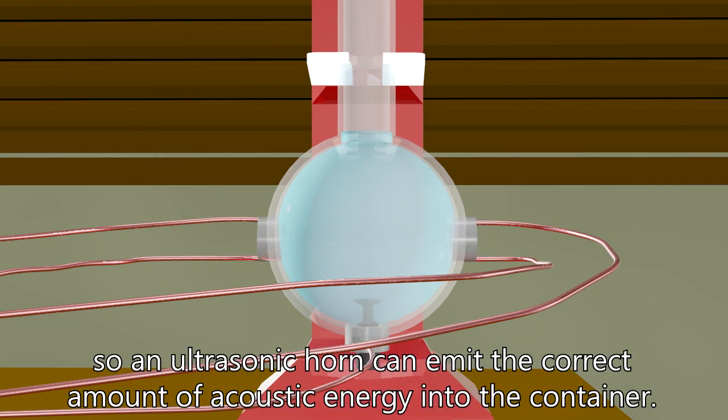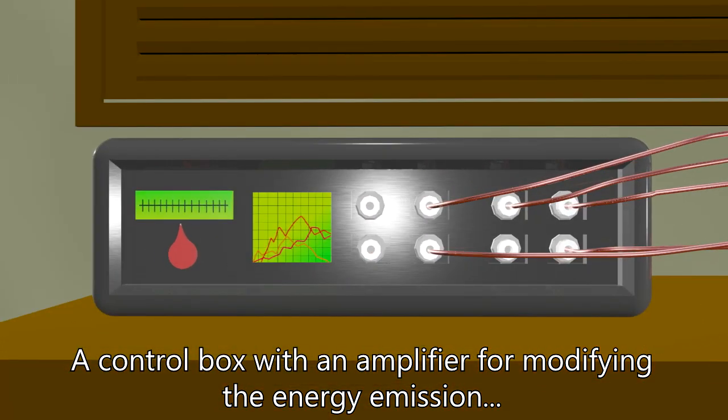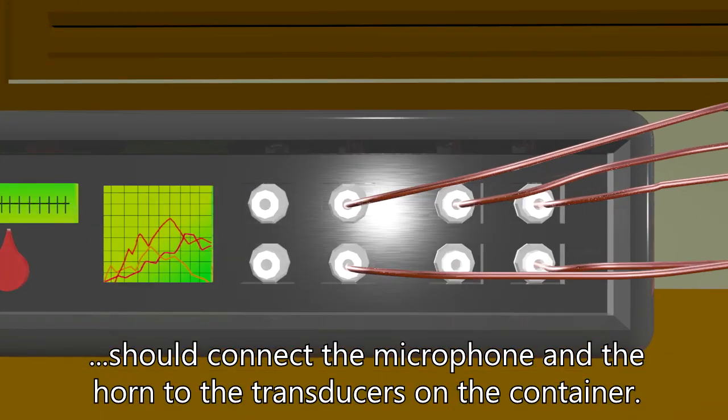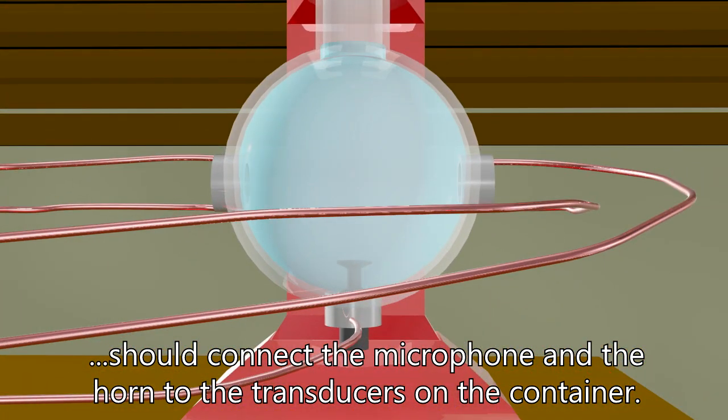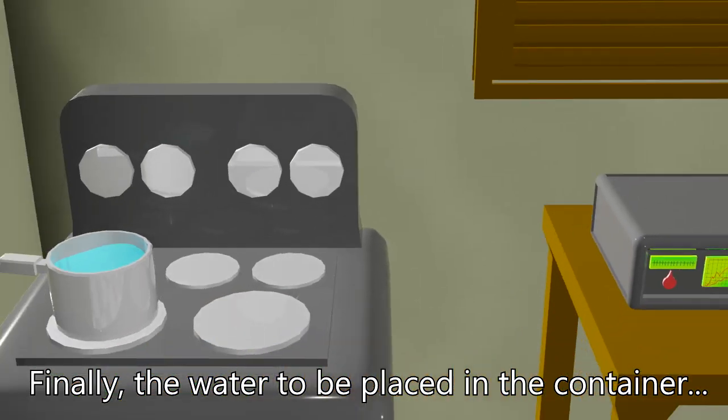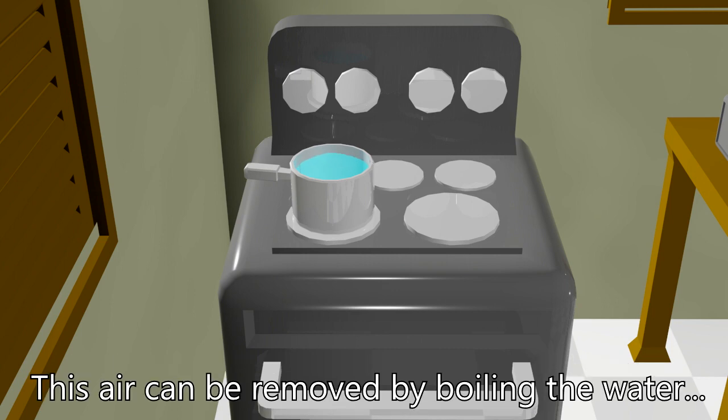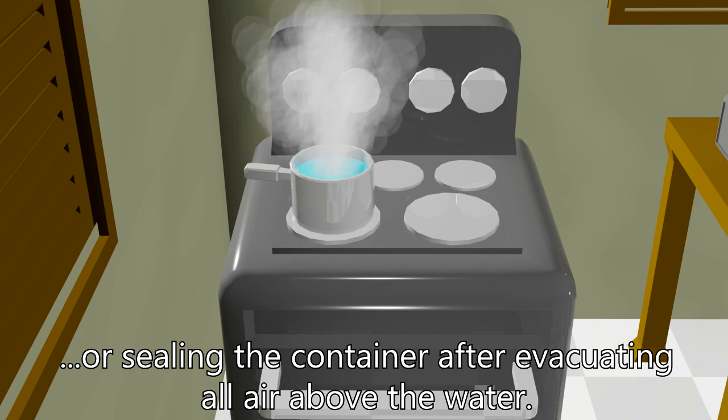A control box with an amplifier for modifying the energy emission should connect the microphone and the horn to the transducers of the container. Finally, the water to be placed in the container should have a considerably lower amount of dissolved air than the average water solution. This air can be removed by boiling the water or sealing the container after evacuating all air from the water.